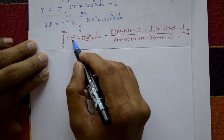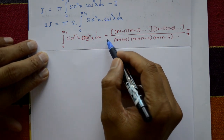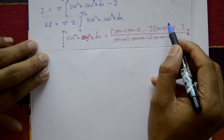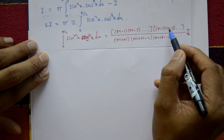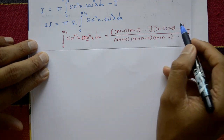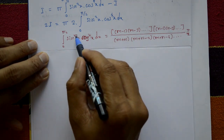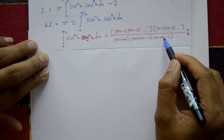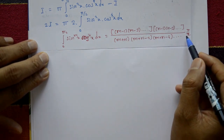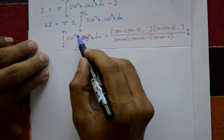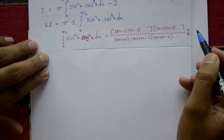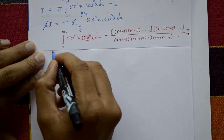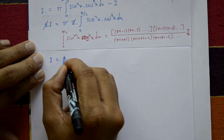Using the reduction formula: ∫₀^(π/2) sinᵐx·cosⁿx dx equals [m(m−1)(m−3)…] · [n(n−1)(n−3)…] divided by [(m+n)(m+n−2)(m+n−4)…], and since both m and n are even, multiply by π/2. The 2's cancel, giving I = π times the result.